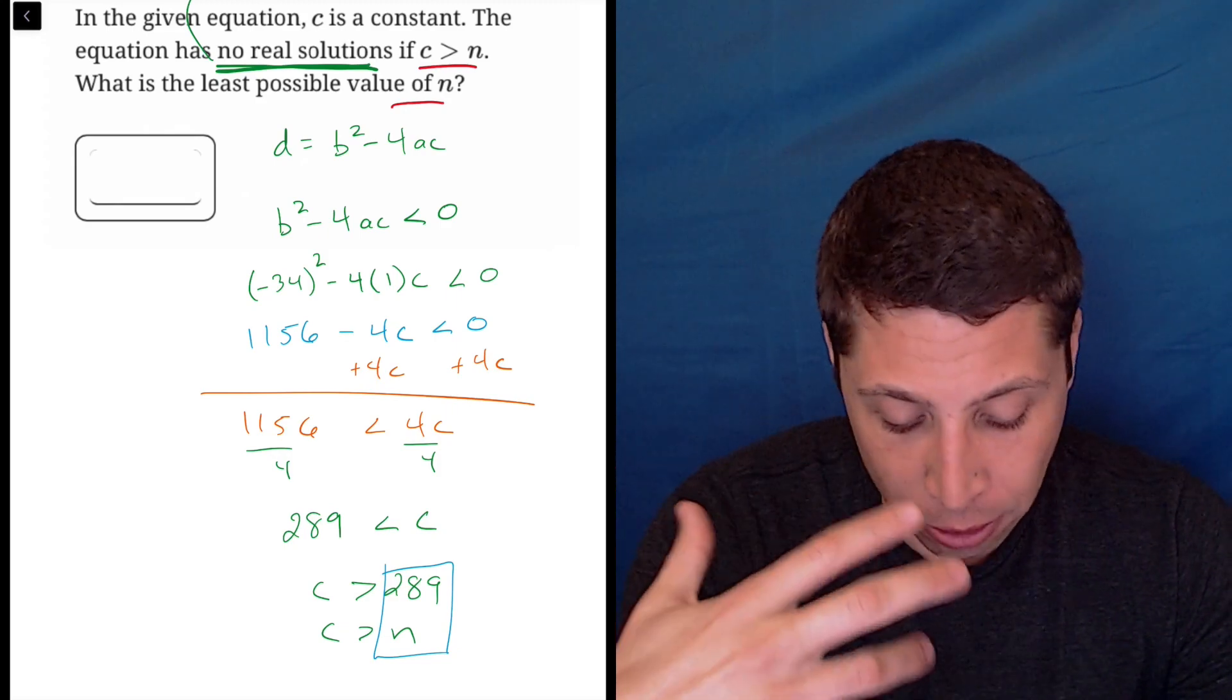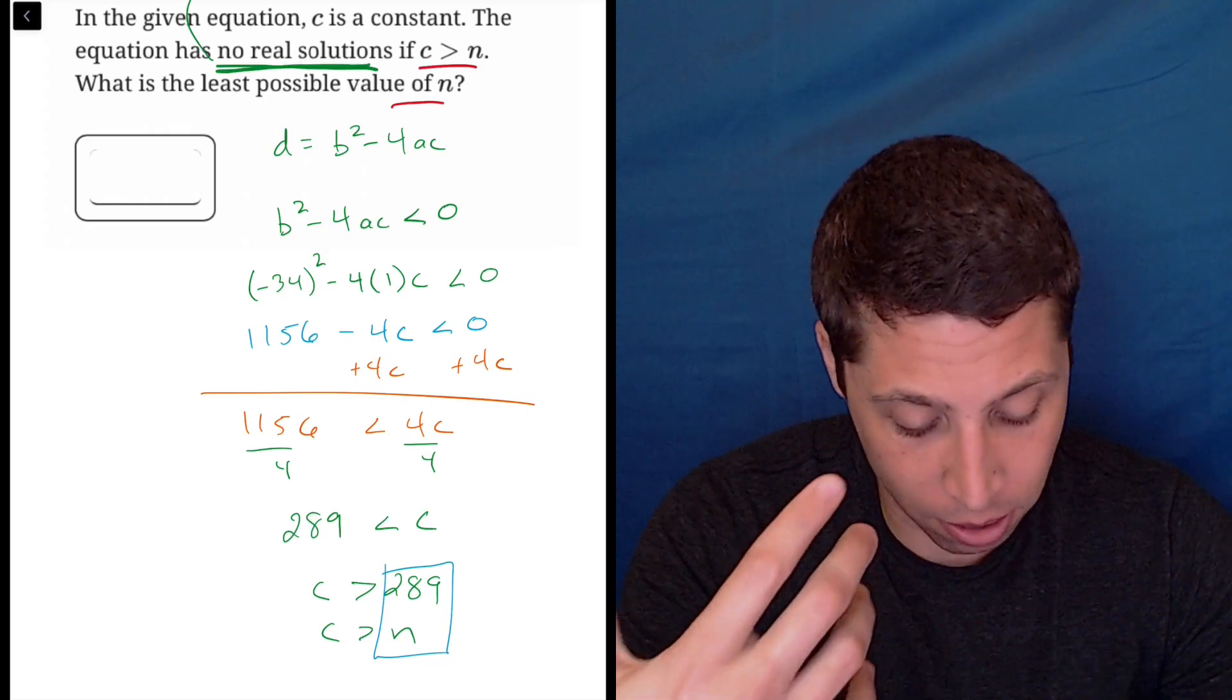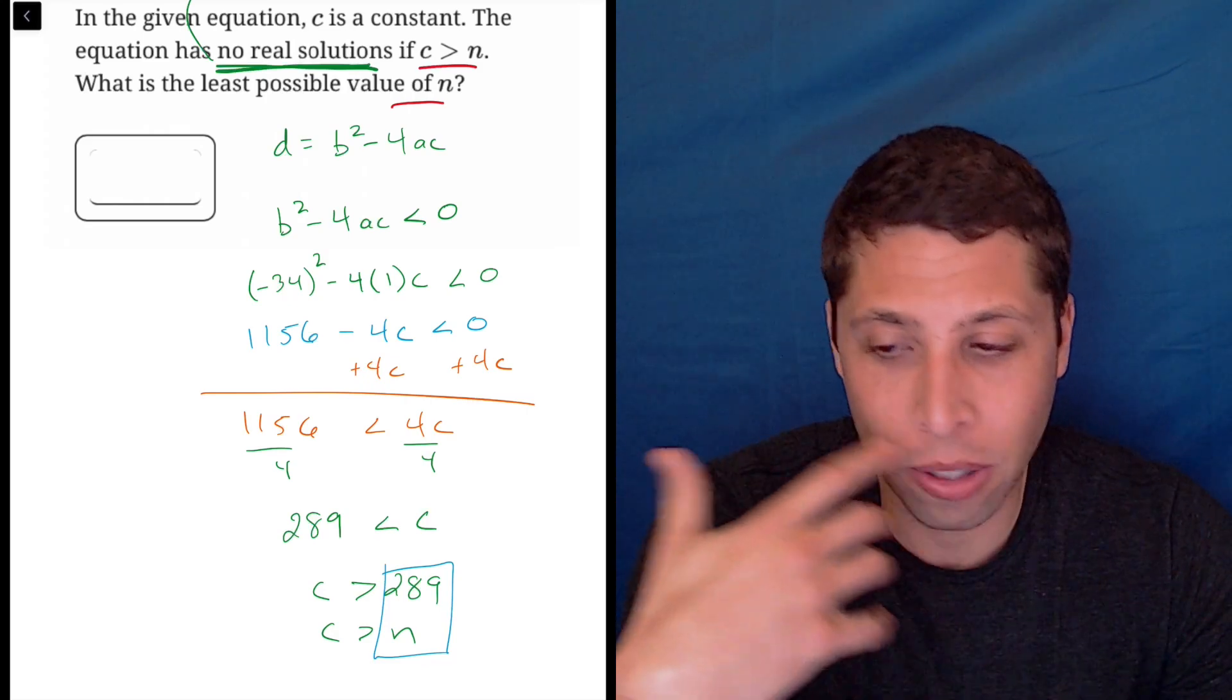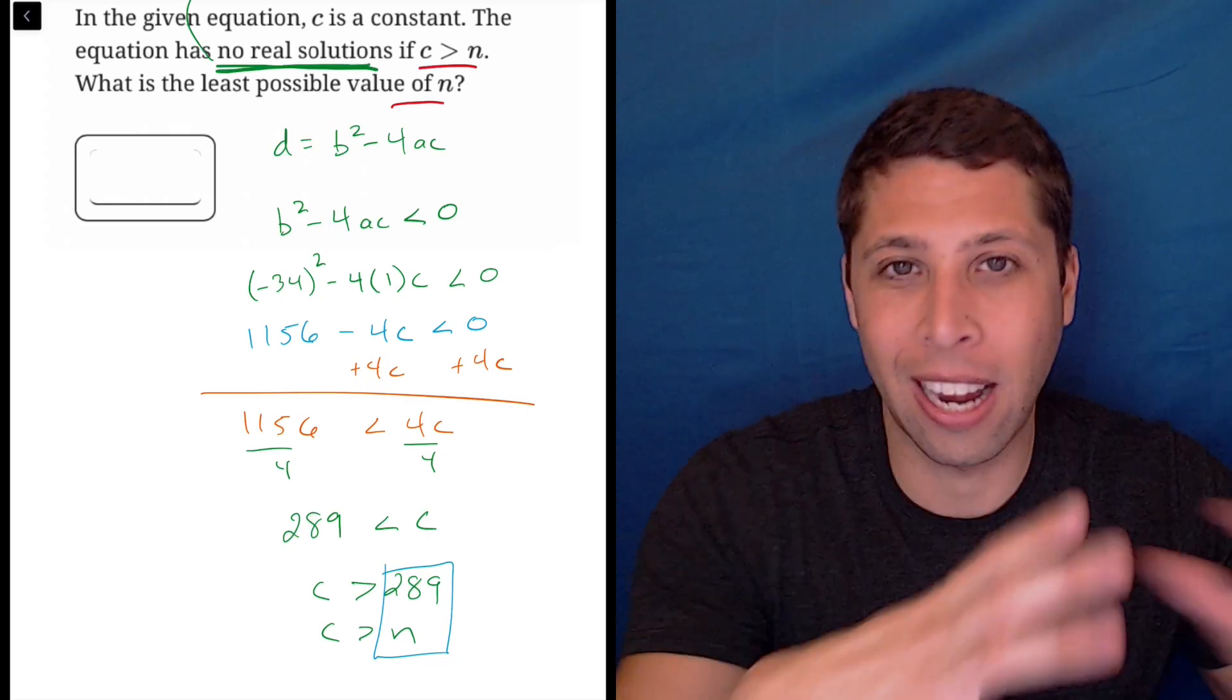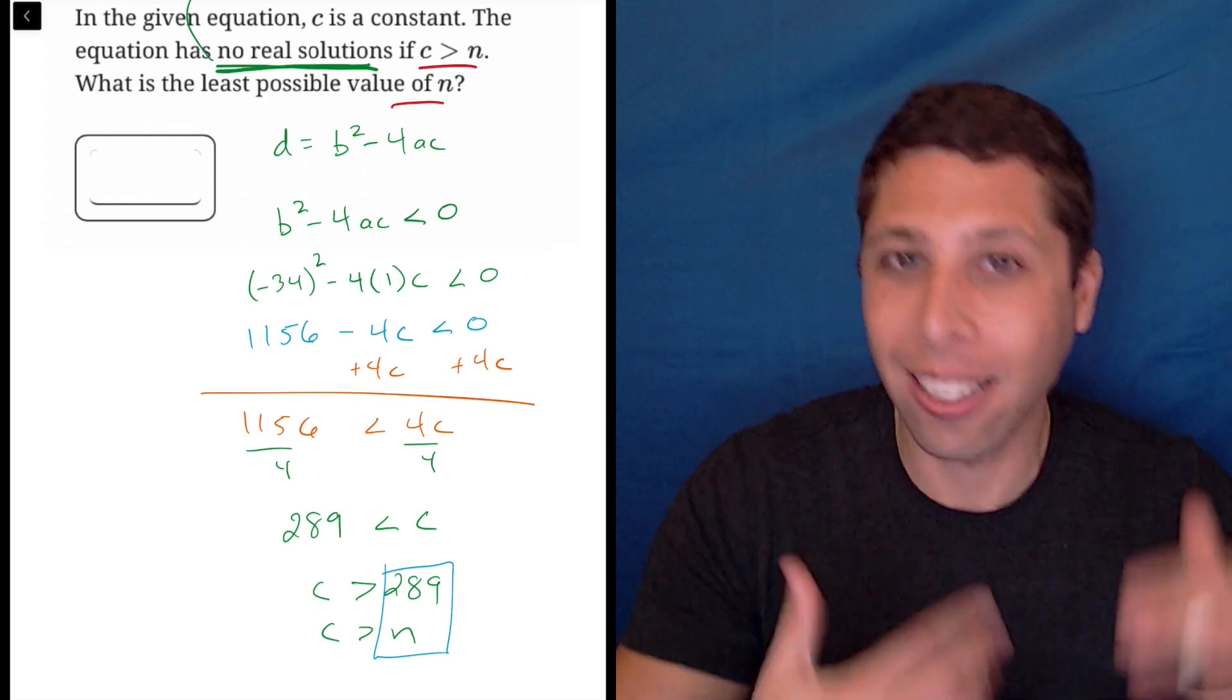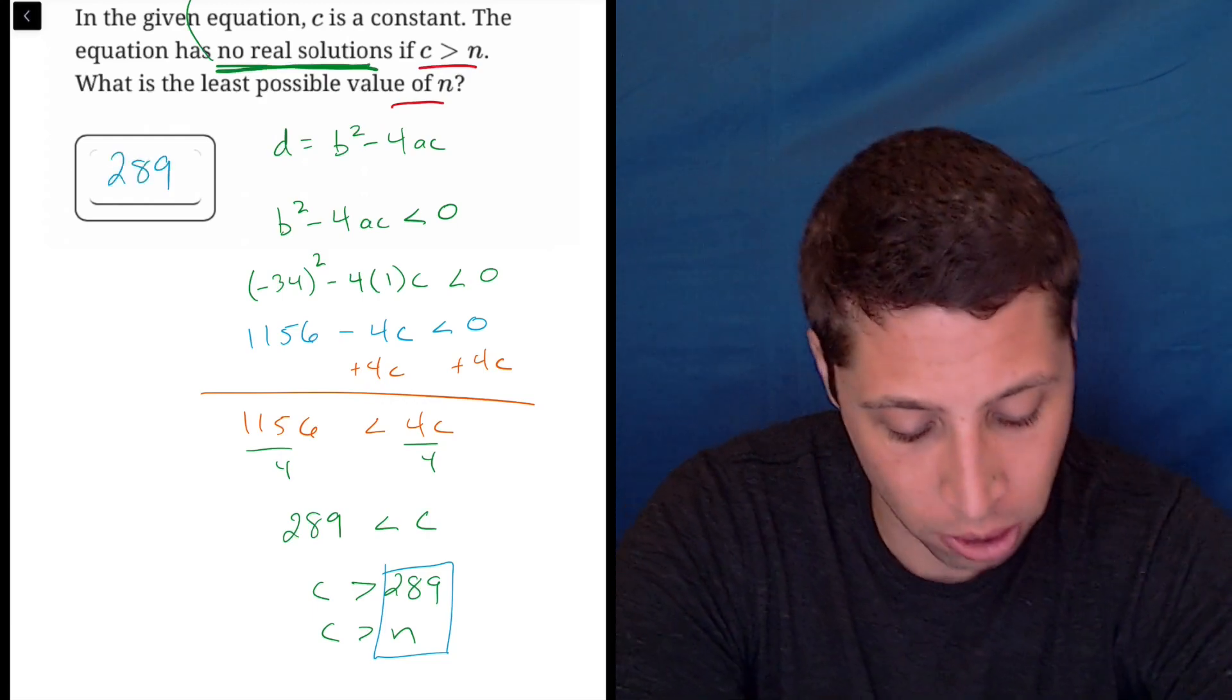What is the least possible value of n? Well, don't let the least possible value part mess with you. It's just n is 289. If it were bigger, it would still kind of work, but we want to find the cutoff point, and that's the cutoff point. We solved for it. So 289 is the answer here.